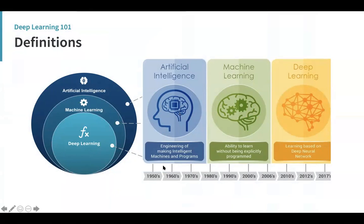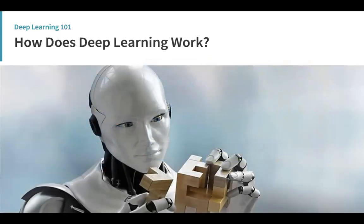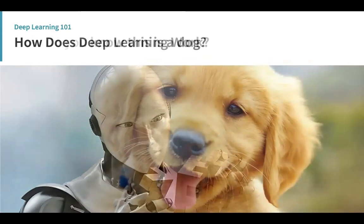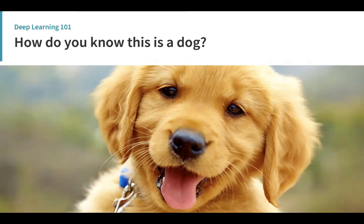Let's do a little deep learning 101. You'll hear a lot about AI, ML, and deep learning — people sometimes use these terms interchangeably but they're not quite the same. Artificial intelligence started in the 1950s and is the engineering of making intelligent machines. Machine learning came a bit later — it's really the ability of a machine to learn without being explicitly programmed, unlike a regular computer program explicitly programmed by an engineer. Deep learning is learning based on deep neural networks and is a recent technology.